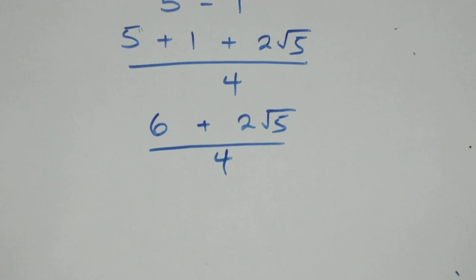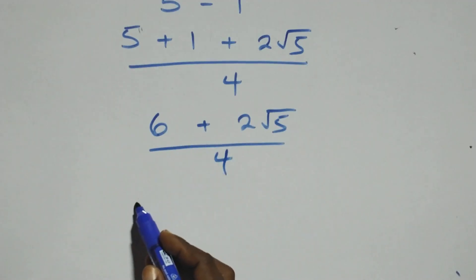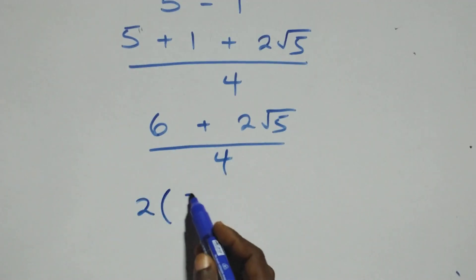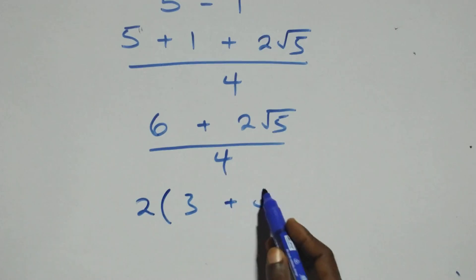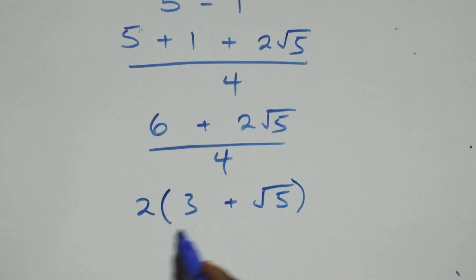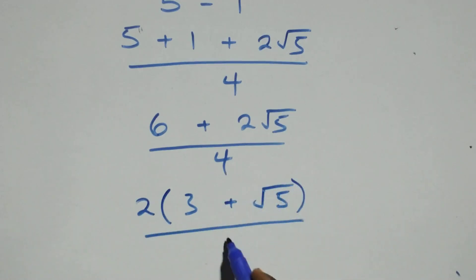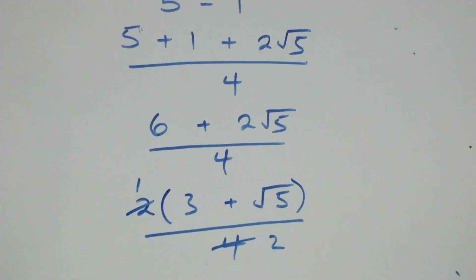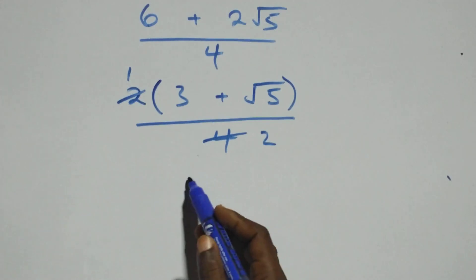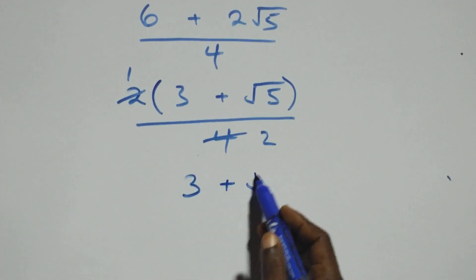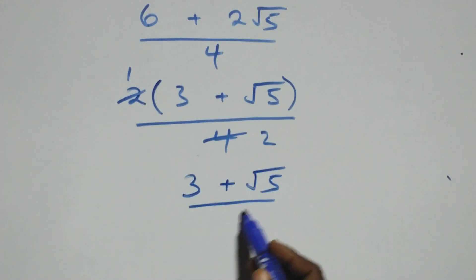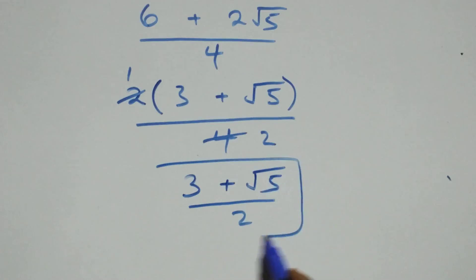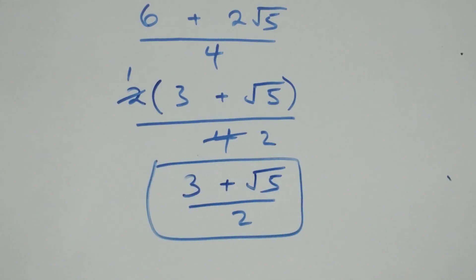Then next step here. 2 is common, we factor it out. We have 2 in brackets: here it means 3 plus root 5, then over 4. And here, 2 goes into 4 twice. Then this becomes 3 plus root 5 over 2. That is the simplified form of this problem: 3 plus root 5 over 2.